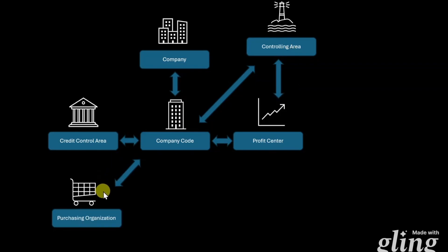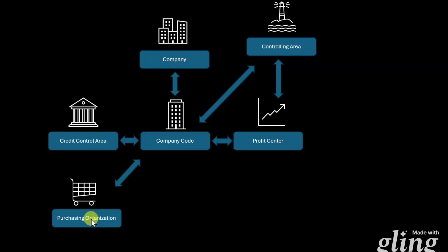Next up, we have the so-called purchasing organization. This is the central organizational unit in materials management, used for our purchasing processes. We can assign one purchasing organization to one or even multiple company codes; however, a single company code can only be assigned to one purchasing organization. We also have the option to not assign our company codes to purchasing organizations at all.